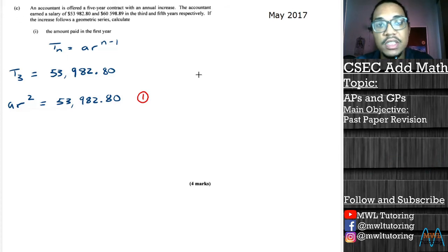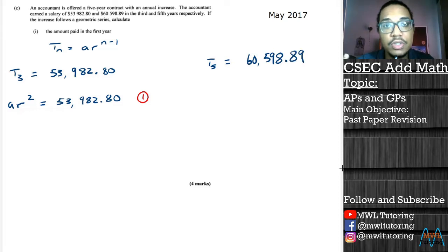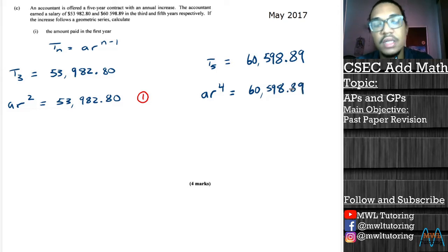We build the second equation the same way we built the first equation. We say we have information for T_5. They told us T_5 is $60,598.89, and we could represent T_5 through a and r where it will be a r^(n-1), n is 5 so 5 minus 1 is 4. This is our second equation right here.